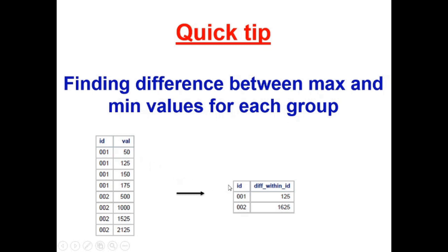In the case of ID 001, the difference is 170 minus 50, which equals 125. For ID 002, the difference is 2125 minus 500, which equals 1625.